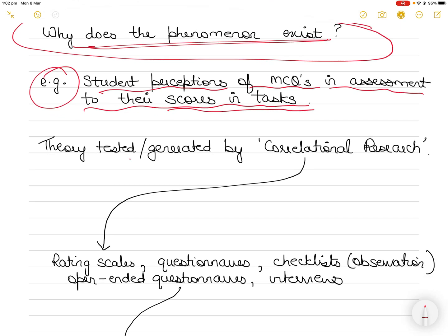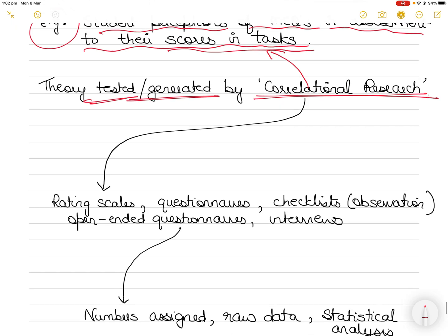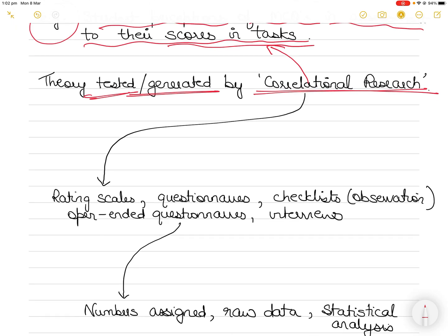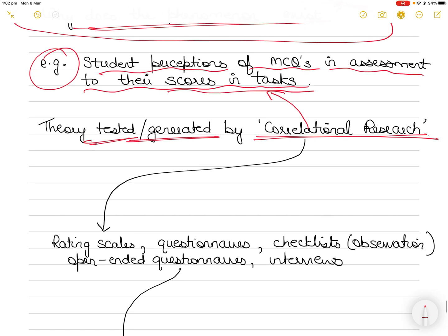So therefore, this type of explanatory theory is not only generated but also tested by something called correlational research. We are trying to establish the correlation between the students' perceptions of multiple choice questioning and their scores in the assessment task. The correlation research requires measurement of the dimensions or characteristics of phenomena in their natural state. How do you measure perceptions? That is going to be one scale. And the other scale is going to be the scores, the assessment task scores.